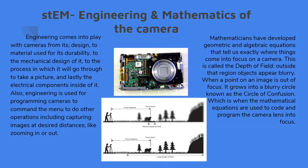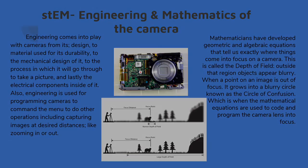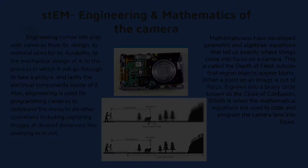Mathematicians have developed geometric and algebraic equations that tell us exactly where things come into focus on a camera — this is called the depth of field. Outside that region, objects appear blurry. When a point on an image is out of focus it grows into a blurry circle known as the circle of confusion, which is when mathematical equations are used to code and program the camera lens into focus.